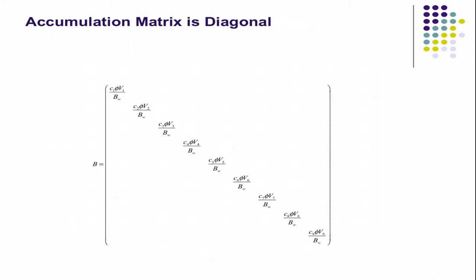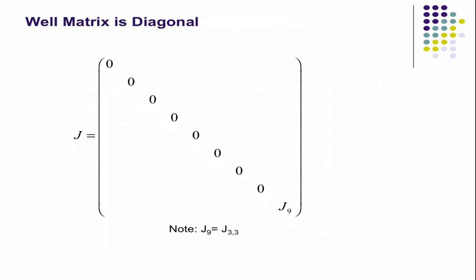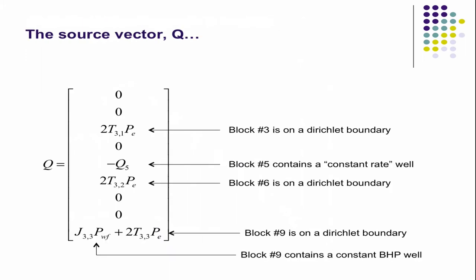Your accumulation matrix, straightforward. Your J matrix, you just have the one entry there. Your source vector is a little more complicated. So you have the two TBs all come from the constant pressure boundary condition on the right. The Q5 comes from the constant rate injector in the center grid block. And this term comes from the constant bottom hole pressure well in the ninth grid block, the upper right-hand corner grid block.